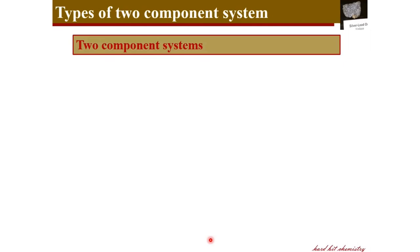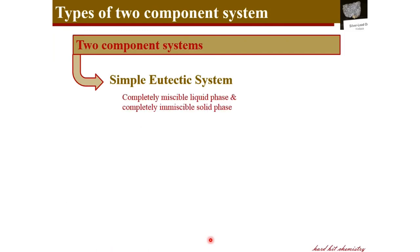Now let us look at different types of two component systems. First, we have simple eutectic systems — systems in which the two components are completely miscible in the liquid phase but completely immiscible in the solid phase. When they are liquid they form a uniform system, but when freezing to the solid state they form two separate phases and become immiscible.